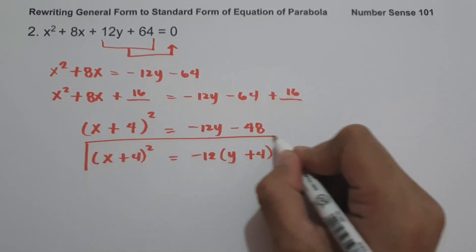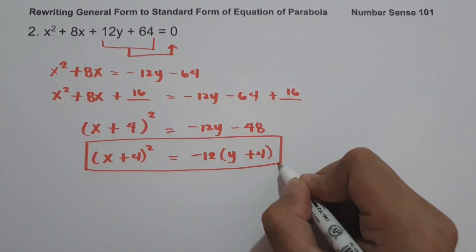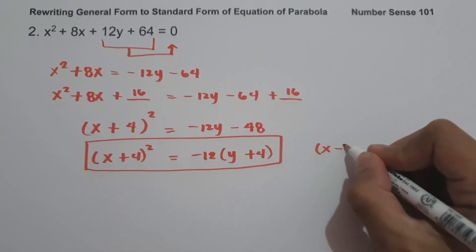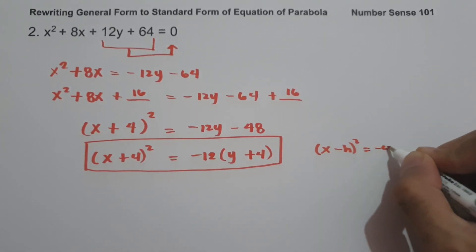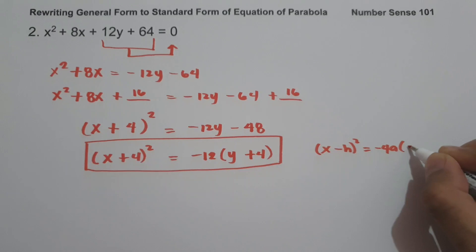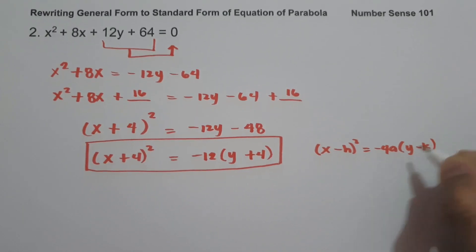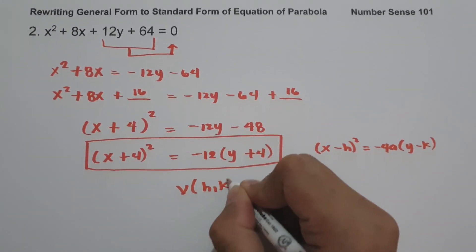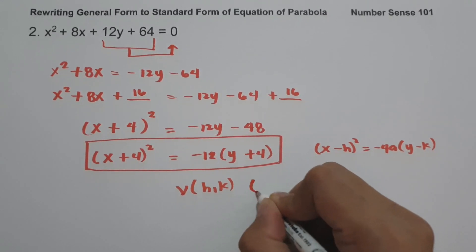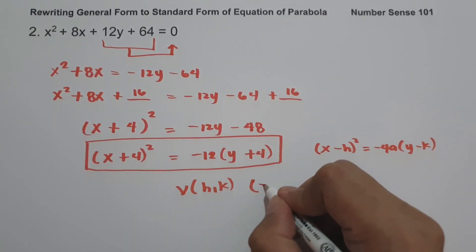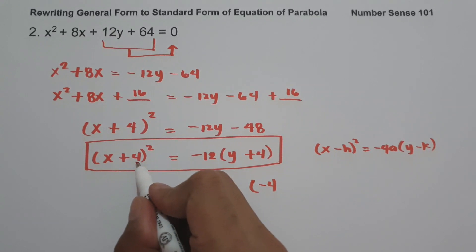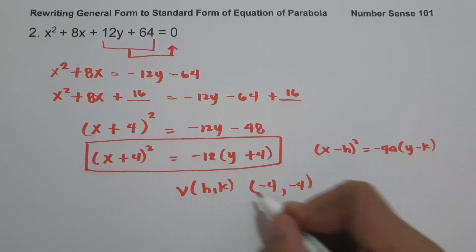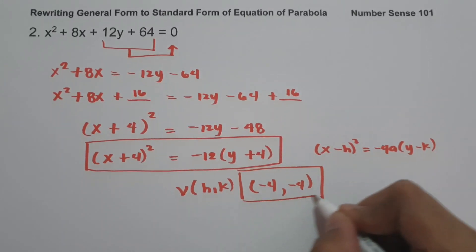This gives us the standard form of the equation of a parabola: (x + 4)² = -12(y + 4). This is written in the form (x - h)² = -4a(y - k). The value of h is -4, which is the opposite sign of +4, and k is also -4. So the vertex is (-4, -4).